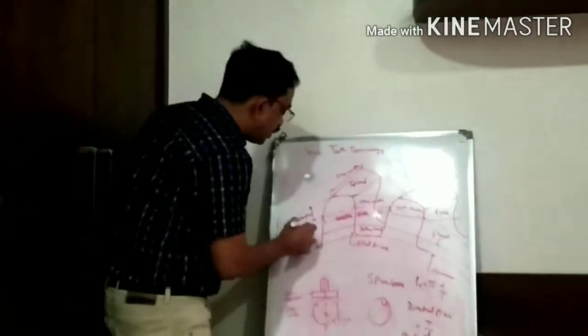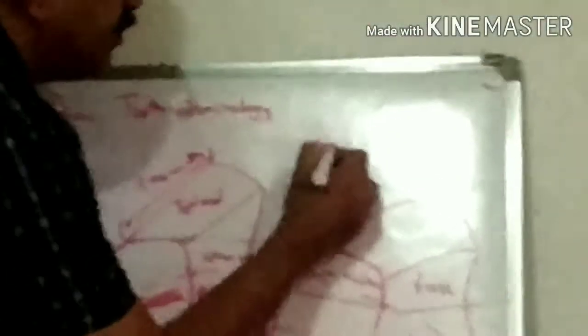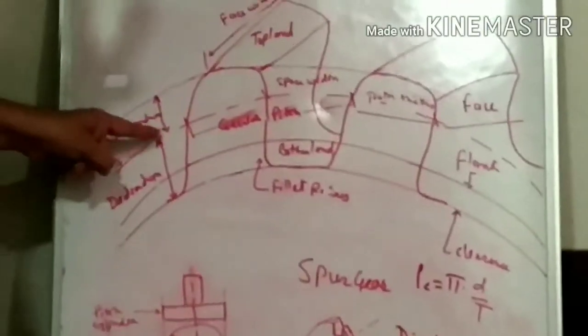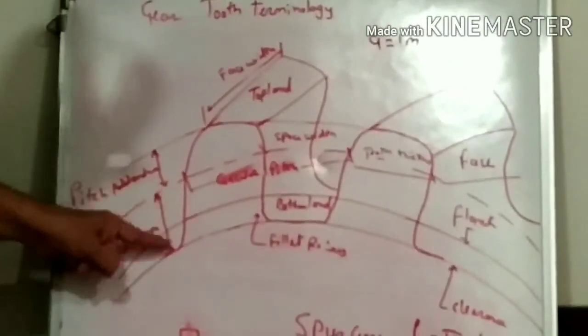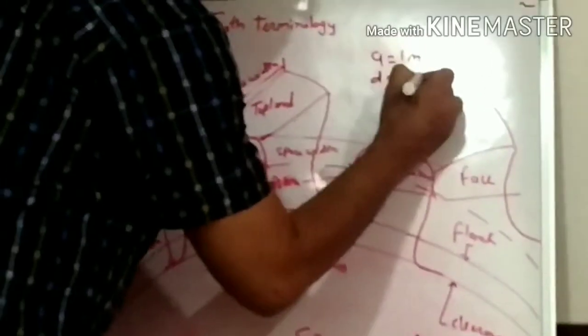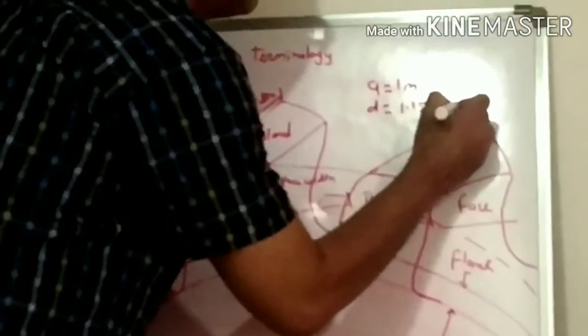The next term is addendum. Addendum is the radial height of the tooth above the pitch circle. The value of addendum is equal to one module. So if we know the module, we can calculate the addendum. Then dedendum is the radial depth of the tooth below the pitch circle. Dedendum is equal to 1.1578 × module.